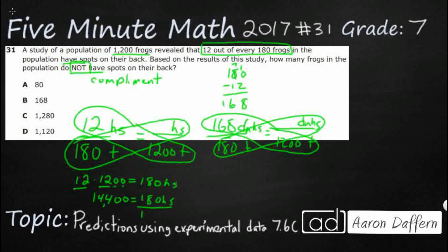I still have a big division to do. I need to divide both sides by 180. That's a lot better than trying to figure out what 168 times 1,200 is. So let's do 180 into 14,400.